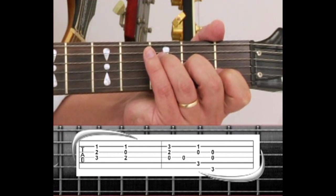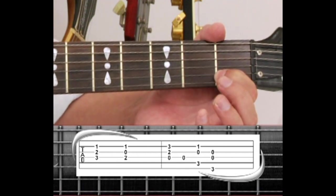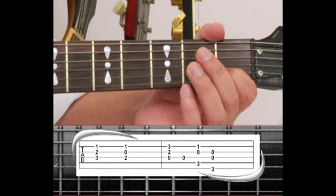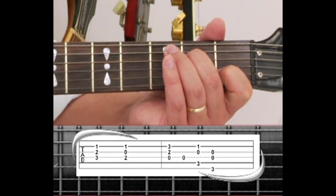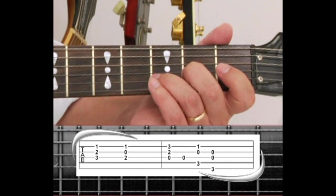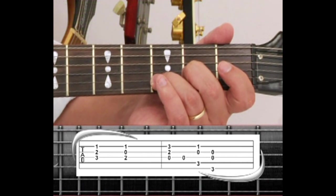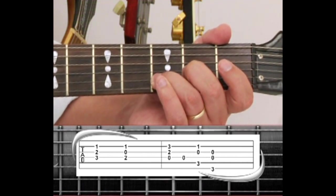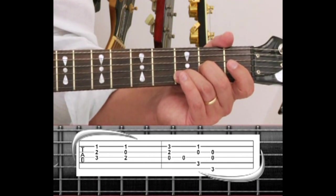Next is C. Keep your index finger on the 2nd string 1st fret, 3rd string 3rd fret, and 4th string is open. Strum, then repeat the 4th string open.